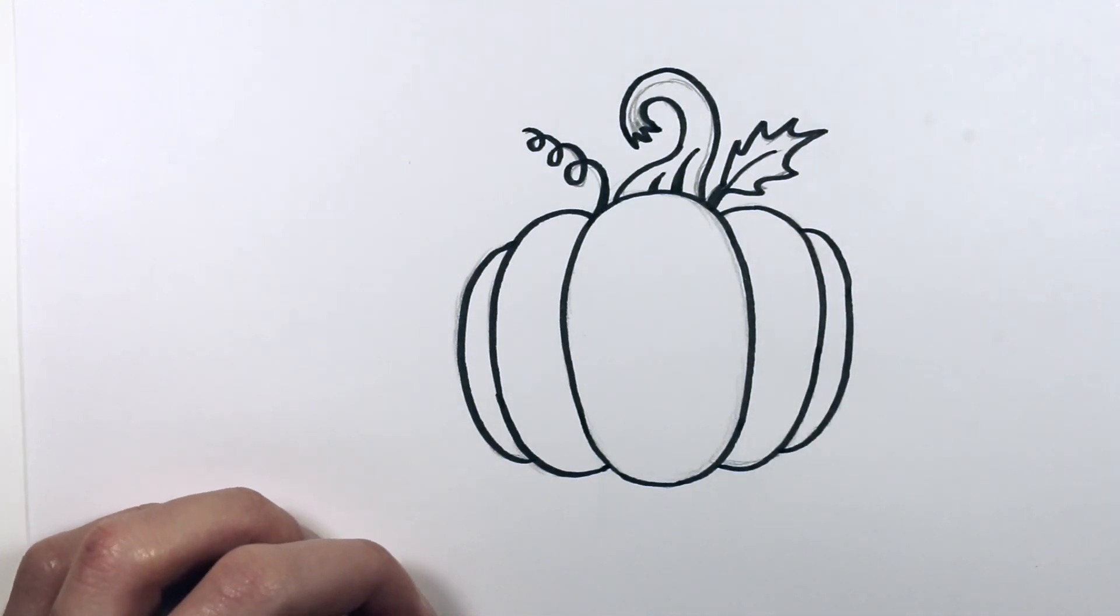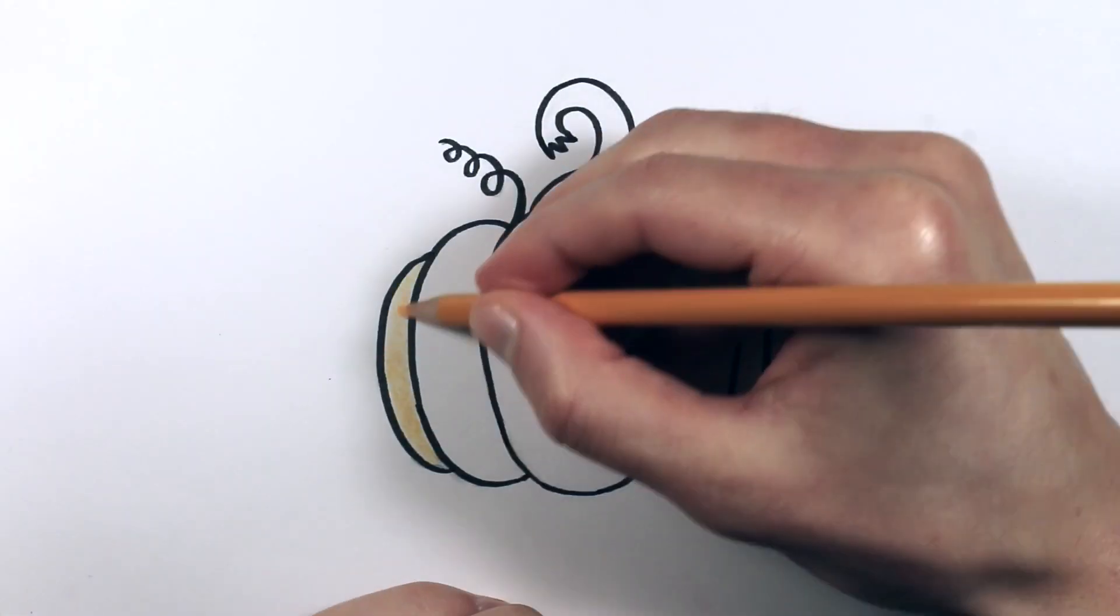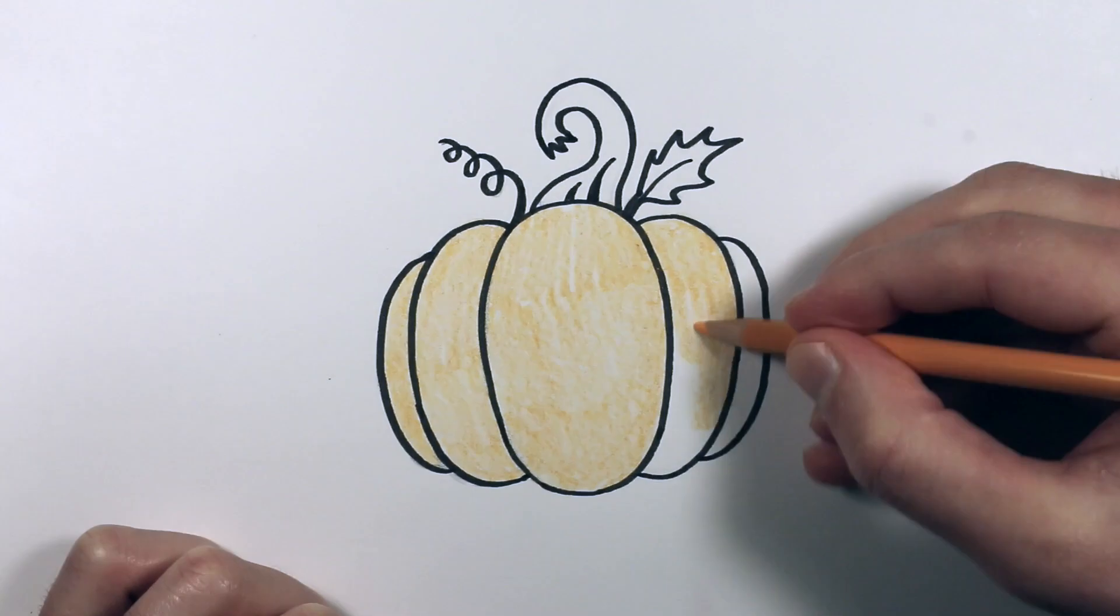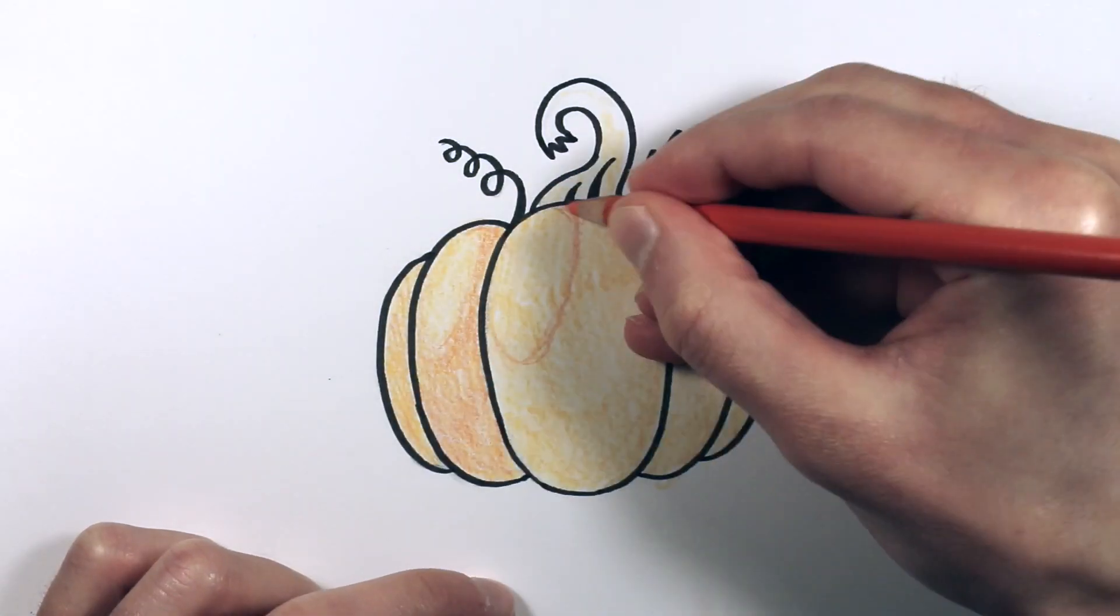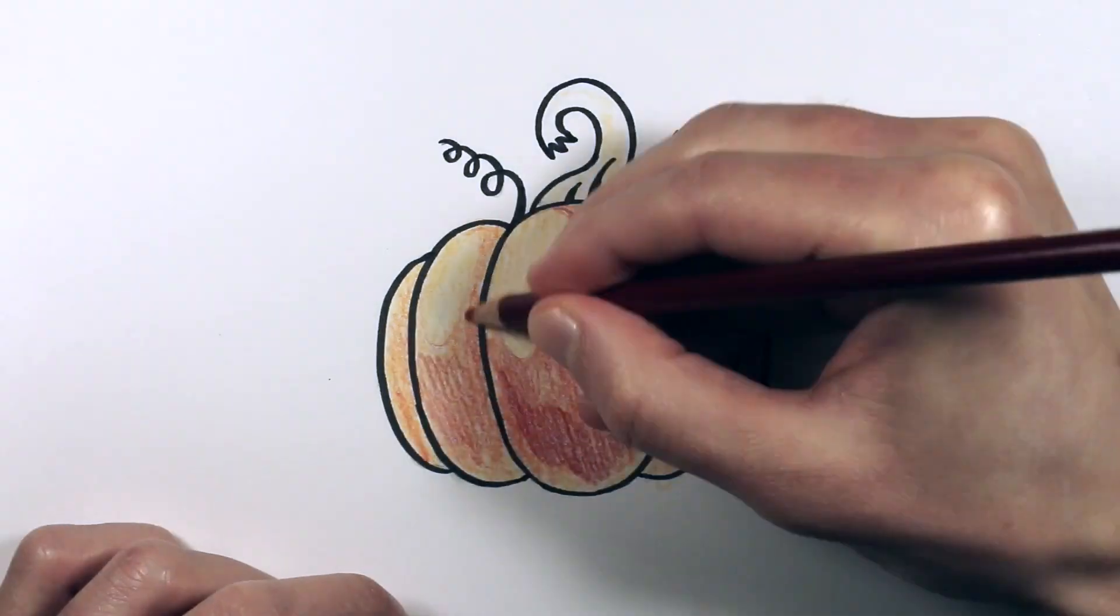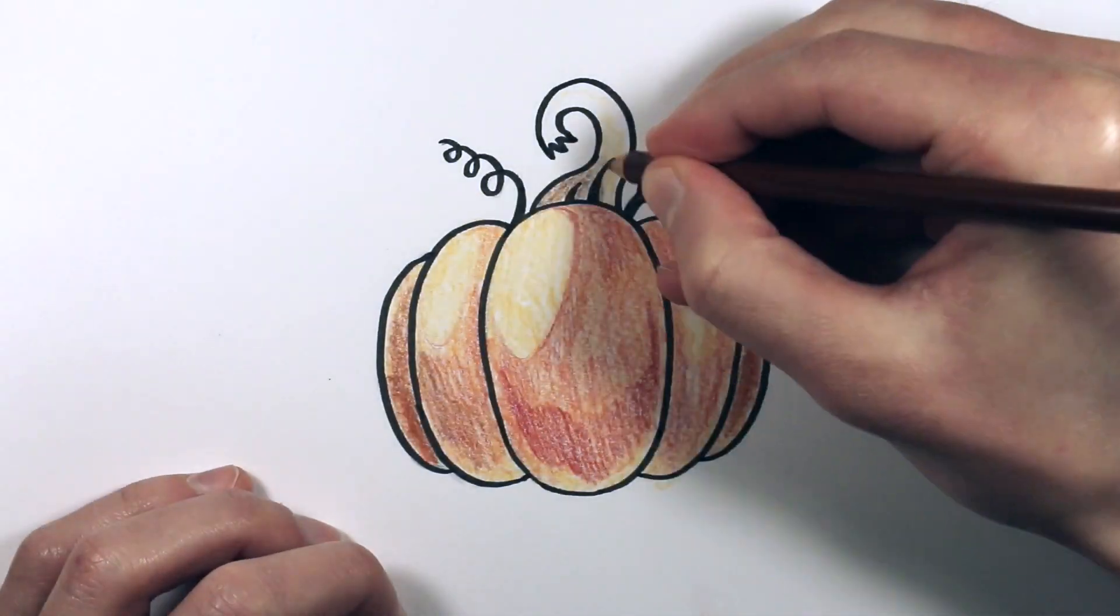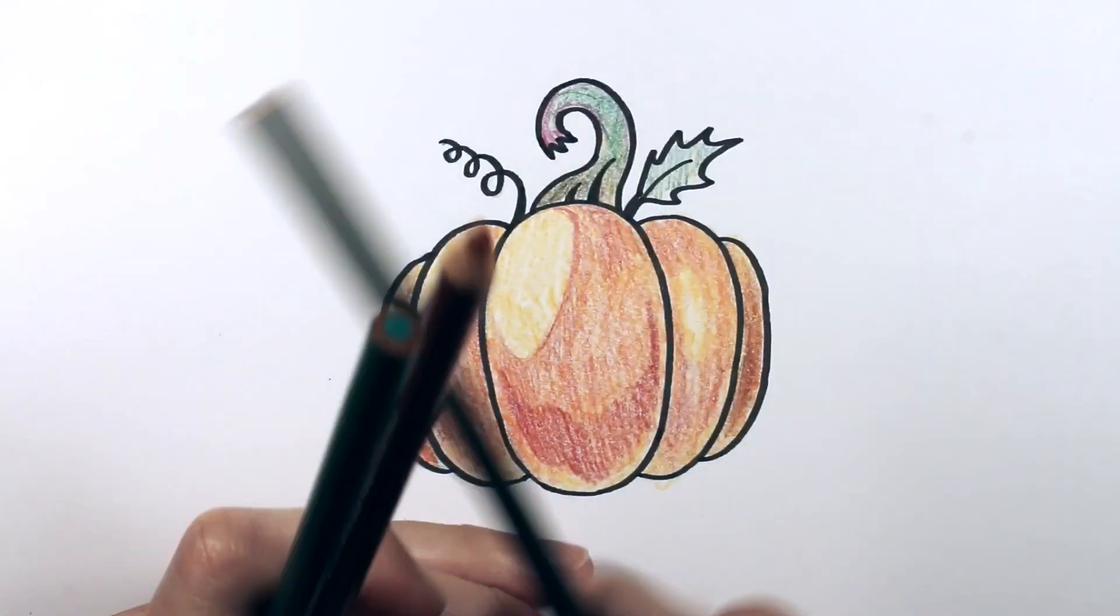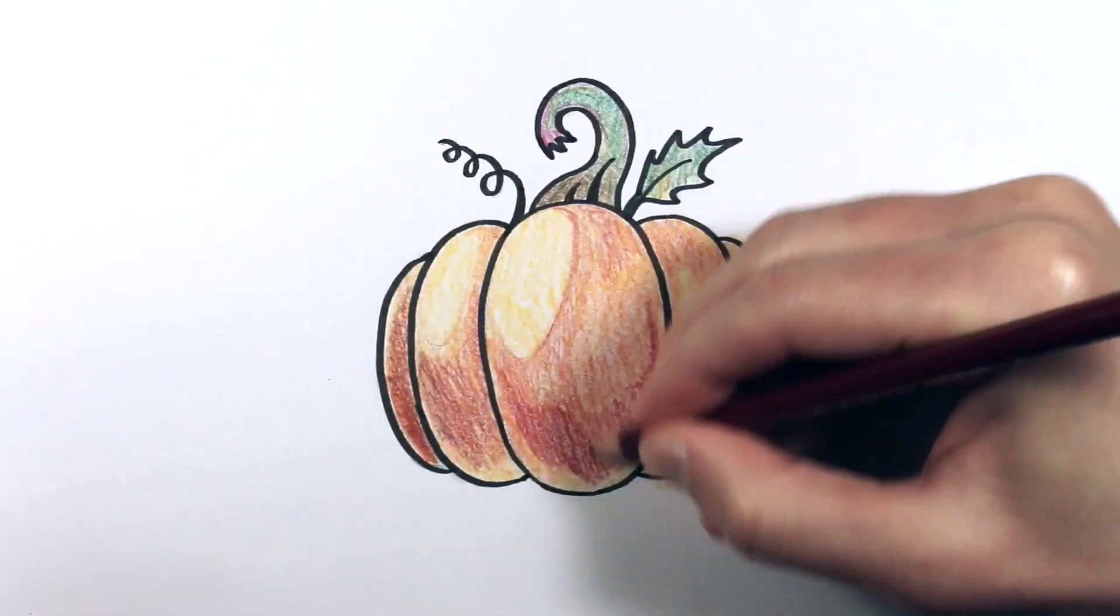And there you have it—there's a pumpkin. Now I'm going to color it in speed video. Thanks a lot for watching, and you can find the links to everything in the description box or the pinned comment below. Anyways, thanks a lot for watching. This is How to Draw Them All, and I'll see you in the next video.